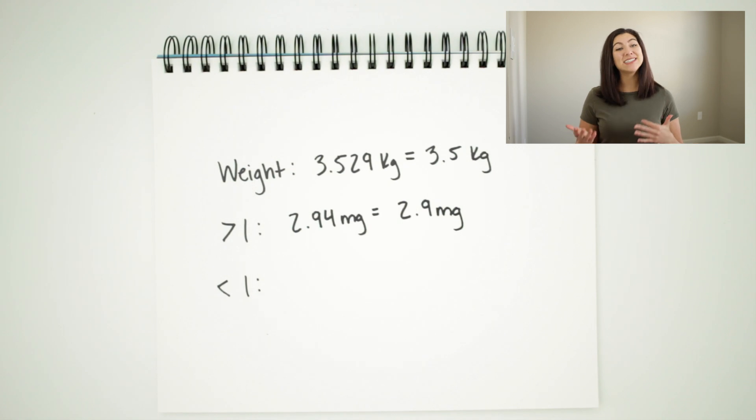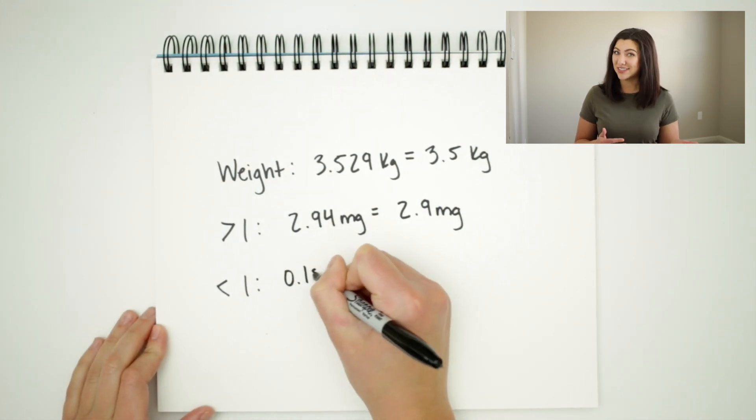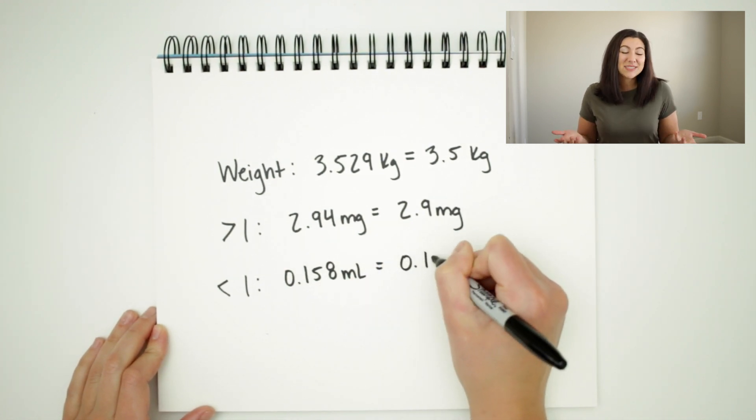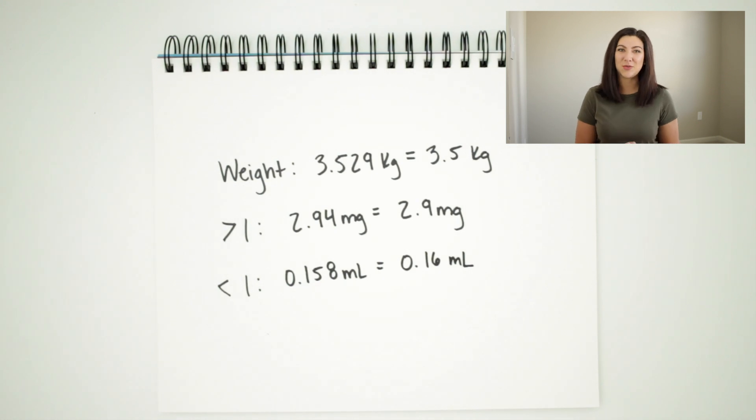If your answer is less than one, you will report your answer to the hundredths, which means that you will list two numbers to the right of the decimal point. This makes sense — the smaller the amount, the more specific we need to be. It's also incredibly important that you include the units. A number by itself doesn't mean anything and your instructor will likely count that answer as incorrect. Always make sure that you have the units there so we know what the number is referring to.